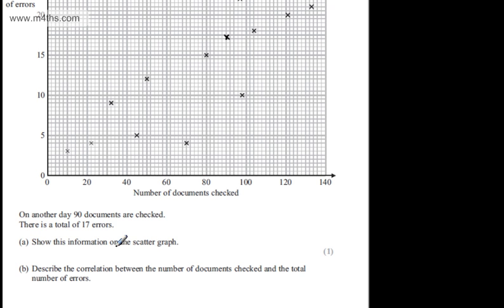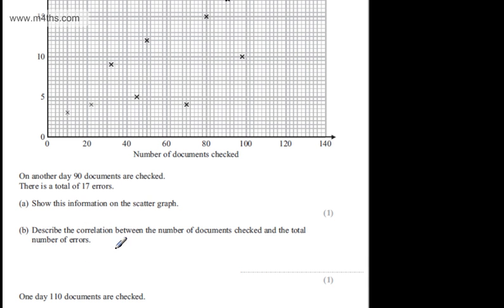Describe the correlation between the number of documents checked and the total number of errors. This is positive. As one increases, the other increases. So positive for one mark.